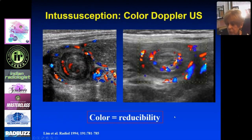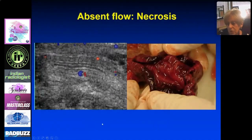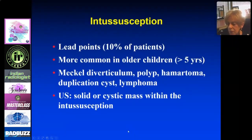This is usually reducible. Lead points occur in 10% of patients and are more common in older children. Lead points include Meckel's diverticulum, polyp, hematoma, duplication cysts, and lymphoma.